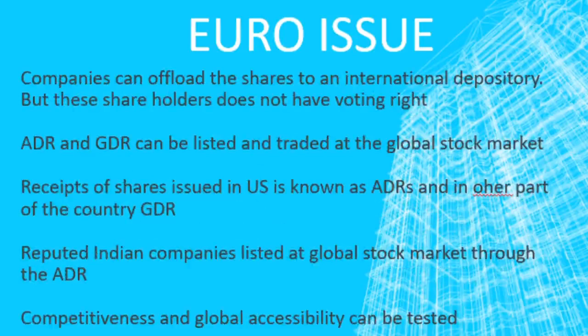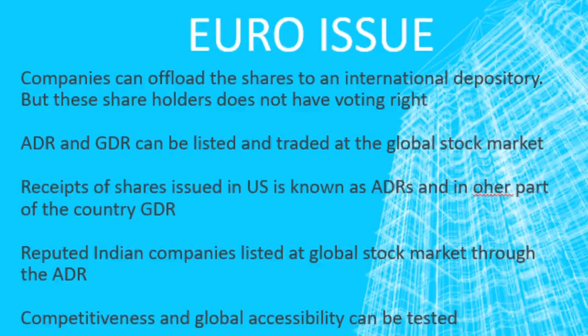One important feature of Euro Issues is that companies can offload shares to an international depository — there will be a foreign depository bank where equities or shares can be offloaded. However, these shareholders do not have voting rights. Another feature is that ADR and GDR can be listed and traded at the global stock market. Receipts of shares issued in the US are known as ADR, and in other parts of the world they are GDR.